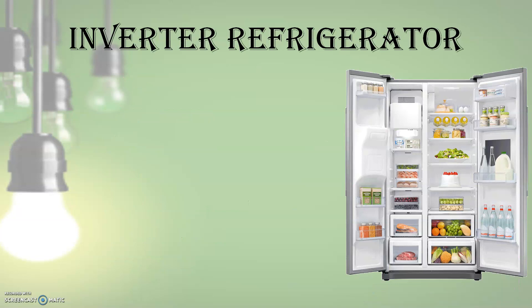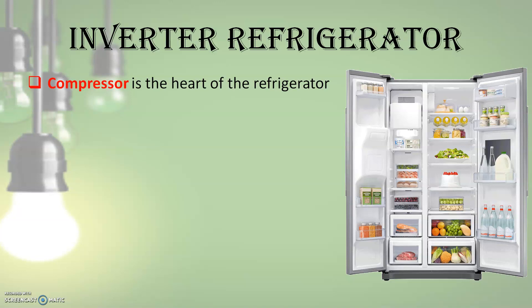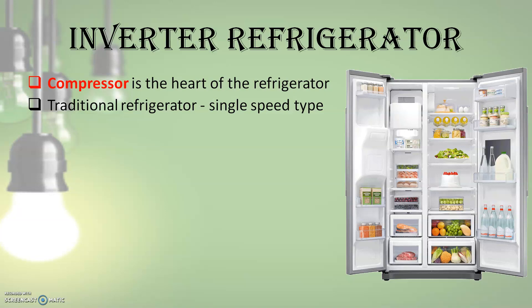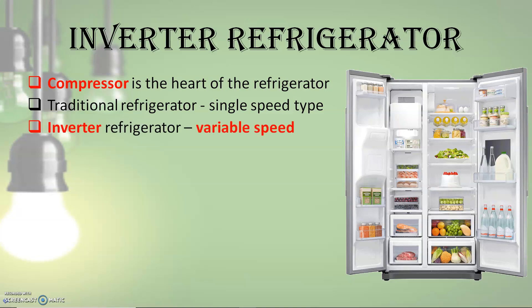Now coming to the inverter refrigerator. The conventional refrigerator most of us use has a compressor — the heart of the refrigerator, similar to an air conditioner. The compressor in a traditional refrigerator is a single speed type, operating only at one fixed speed, and in a day it goes through cycles of on and off. You may have noticed this in your traditional refrigerator — at one point the unit gets quiet, then the compressor works again. In an inverter refrigerator, the compressor fitted to it is the inverter itself.